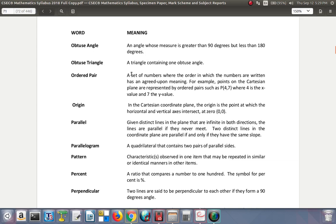Ordered pair: a set of numbers where the order in which the numbers are written has an agreed upon meaning. For example, points in the Cartesian plane are represented by ordered pairs such as point P, coordinates 4, 7, where 4 is the x value and 7 is the y value.